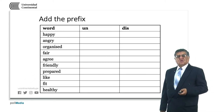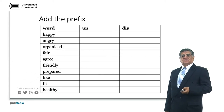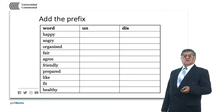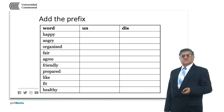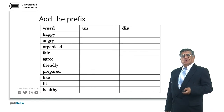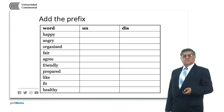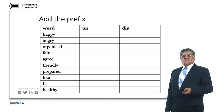Now, please add a corresponding prefix — un- or dis- — to the following adjectives: happy, angry, organized, fair, agree, friendly, prepared, like, fit, healthy. Note that not all these adjectives will have a corresponding form with un- or dis-.